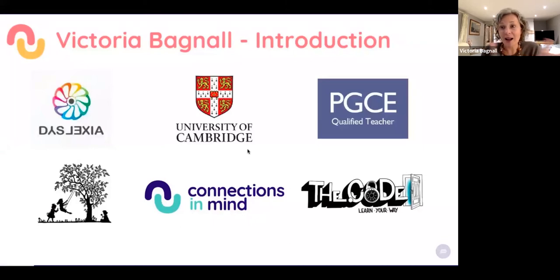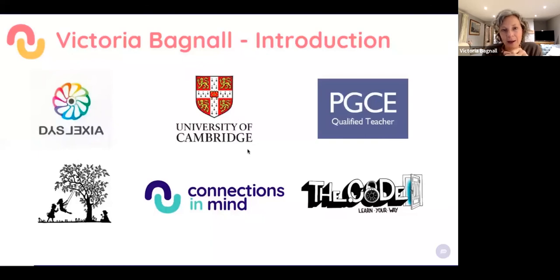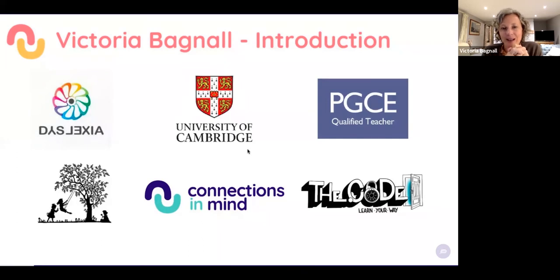A little introduction to me and why I'm here speaking to you today. My name is Victoria Bagnall. I am dyslexic — I have a diagnosis of dyslexia — but despite my challenges I have extremely strong goal-directed persistence, which is an executive function skill, and there was nothing going to stop me getting to Cambridge University where I suffered severe discrimination because of my neurodiversity. I was quite bruised by the experience and vowed never to go into academia again, but I eventually fell in love with teaching and went back to do my PGCE.